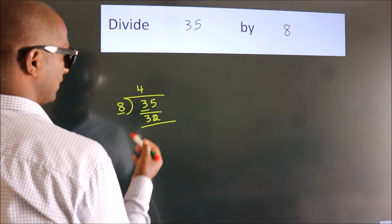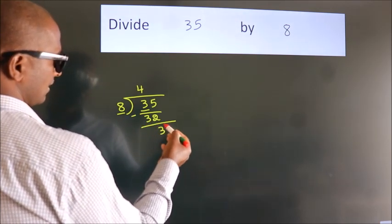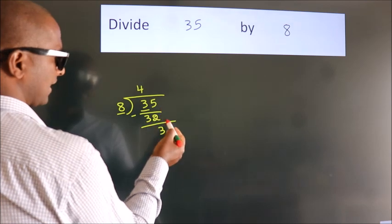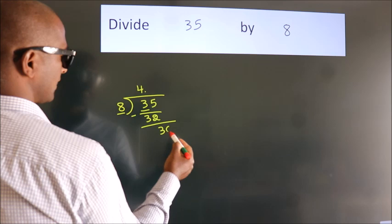Now we should subtract. We get 3. After this, no more numbers to bring it down, so what we do is we put a dot and take 0.